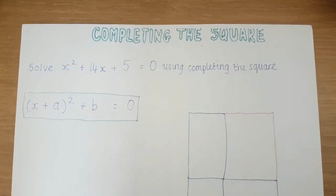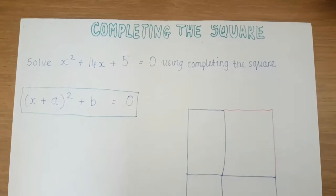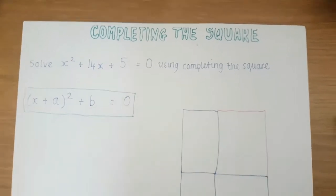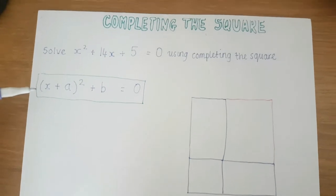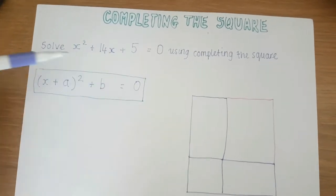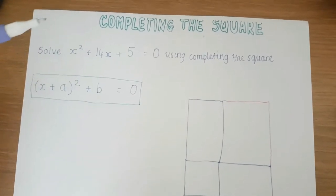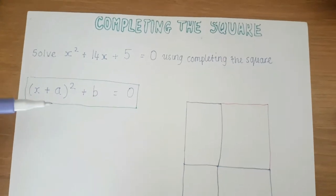So I have a quadratic here where I've got x² + 14x + 5 = 0 and I want to solve it using completing the square. Now in this box here I've got the completed square form (x + a)² + b = 0 and we want to get it into this form so we can then rearrange and solve really easily. The most confusing part is how we get it into this form.